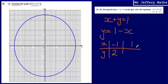And then the second coordinate, when x is 1, 1 minus 1 will give me 0.